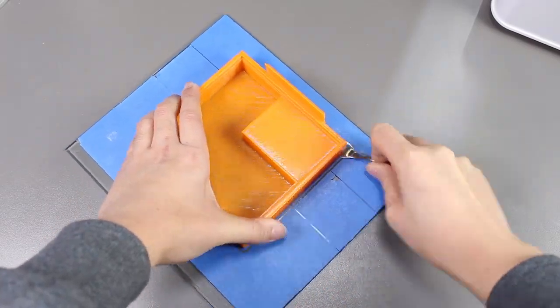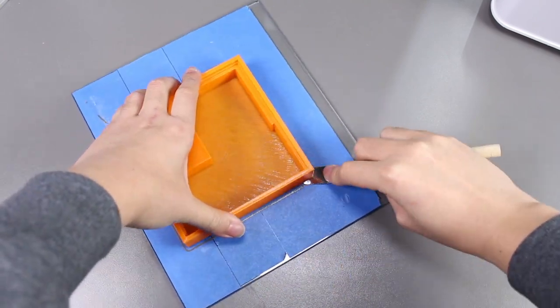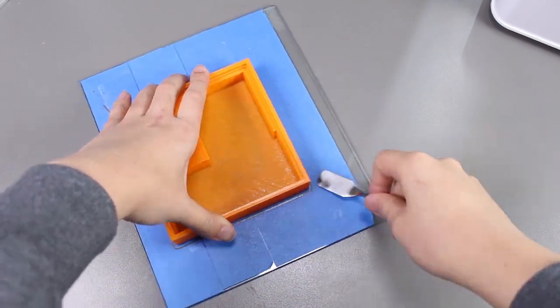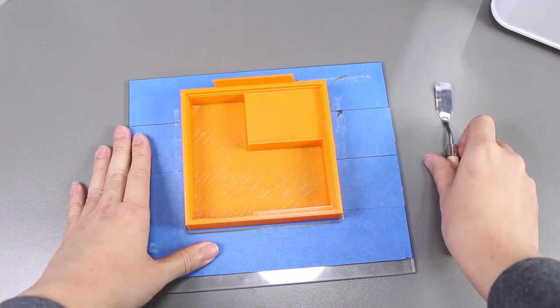So I am having some difficulties putting this print removal knife under the corners. It doesn't seem like it wants to budge on all four corners.